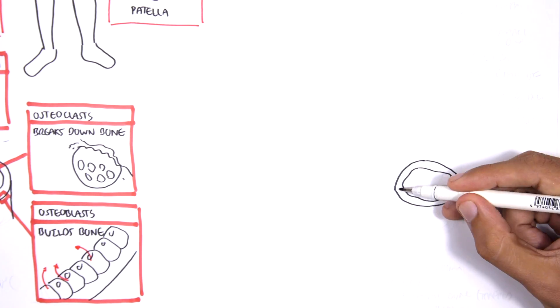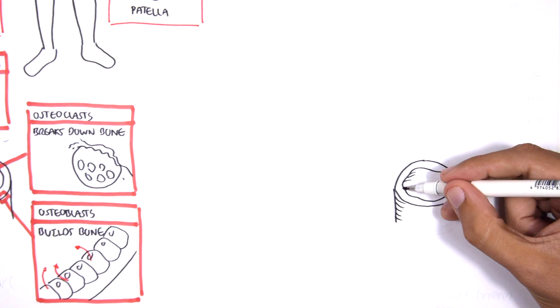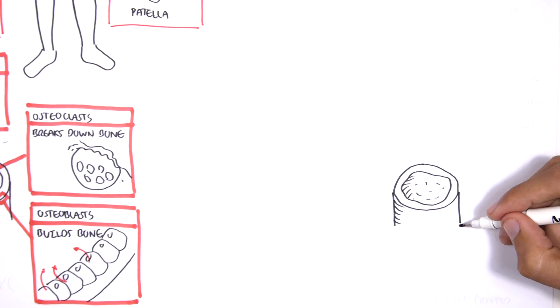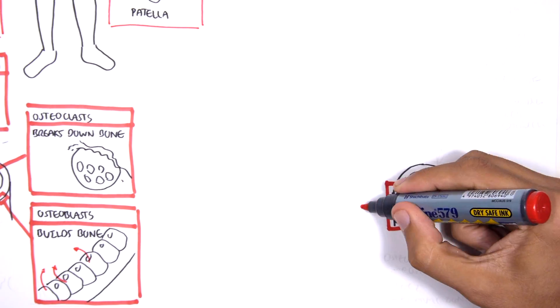Now, let's draw the same cross-section of the long bone with the medulla. Let's see how these cells that we just talked about actually make up the bone.